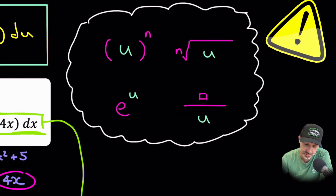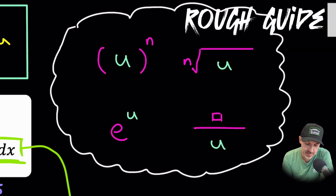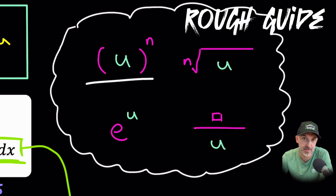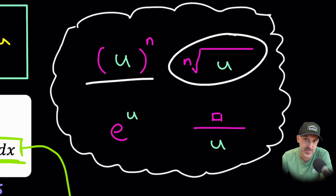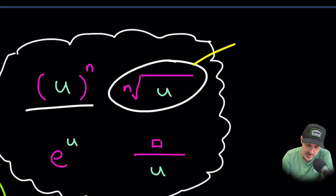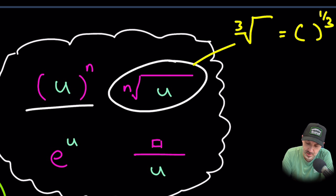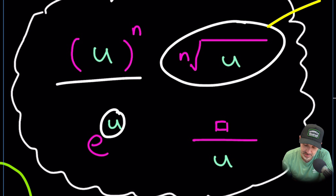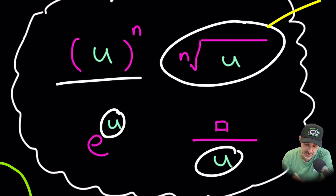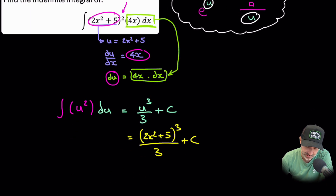When you see a question, how do you know what U is? Here's a rough guide: if you have parentheses or brackets, the value inside will be U. If you have a root, the value underneath will be U — because a root can be rewritten as something to the power of one third, making it the same as the first rule. Anything with E: the power of E will be U. And usually, when you have a quotient, the denominator will be U — though that won't always be the case.